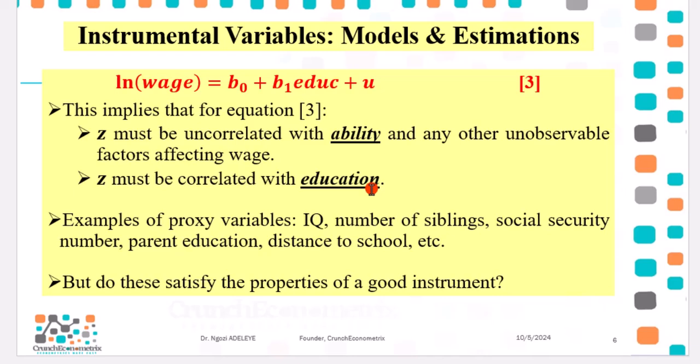And you can actually use different proxies for ability. It doesn't have to be IQ alone. You can use number of siblings, social security, parent education, distance to school, etc. But the good question will be, do these instruments satisfy the properties?